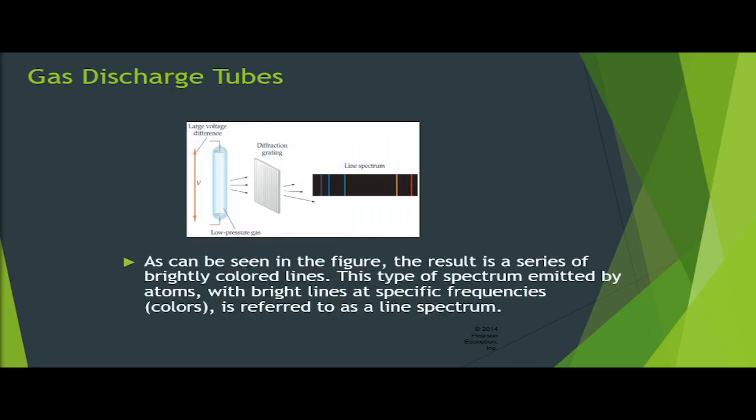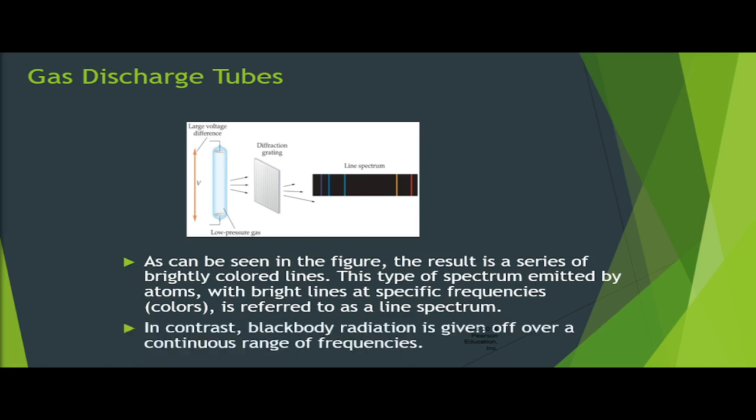During the 1900s, a device known as a gas discharge tube was used to study the light given off by atoms. When a high voltage is applied to the ends of a glass discharge tube containing gas at low pressure, the atoms become excited and emit electromagnetic radiation. Passing the radiation through a diffraction grating separates it into its various wavelengths, resulting in a series of brightly colored lines. This type of spectrum — with bright lines at specific frequencies — is called a line spectrum, in contrast to blackbody radiation which is given off over a continuous range.